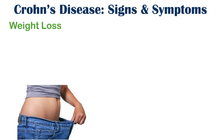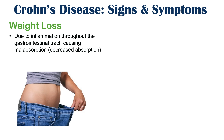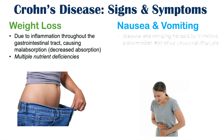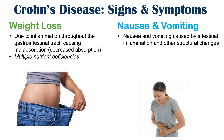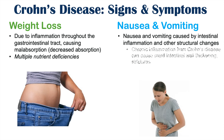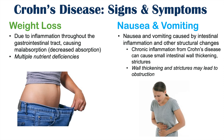Weight loss occurs in Crohn's disease patients due to inflammation throughout the gastrointestinal tract causing malabsorption or decreased absorption, ultimately resulting from multiple nutrient deficiencies. Nausea and vomiting are also caused by intestinal inflammation and structural changes. The chronic inflammatory state can cause the wall of the small intestine to thicken and strictures to form, which can lead to small bowel obstruction, presenting with nausea and vomiting.